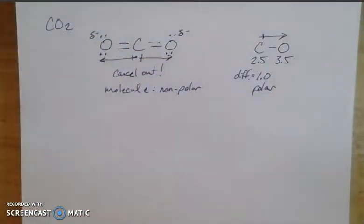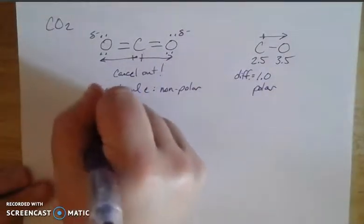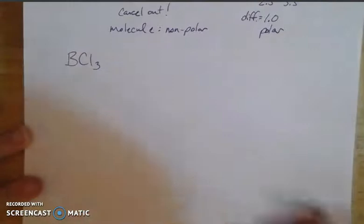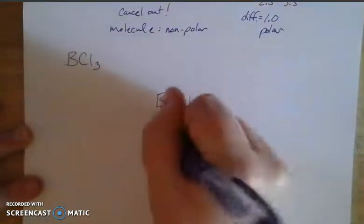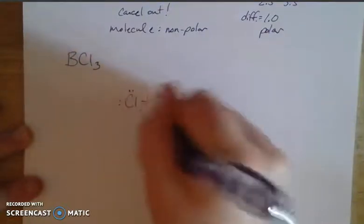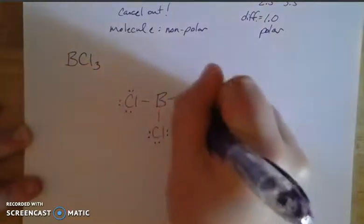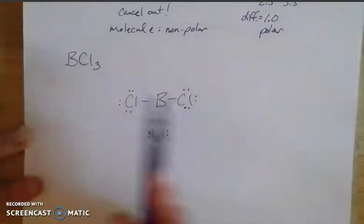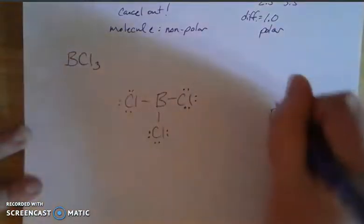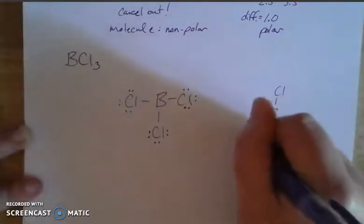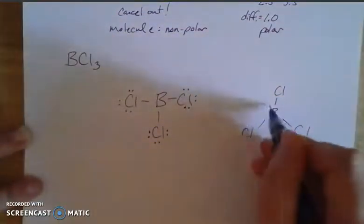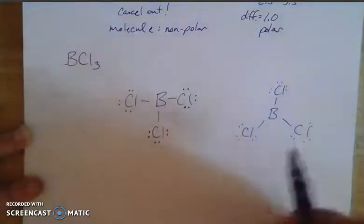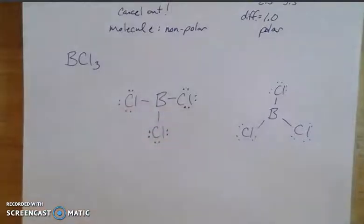Let's do one more example — boron trichloride, BCl3. Boron is a metalloid with three valence electrons, so it likes to make three bonds. The Lewis structure has lone pairs on all three chlorines but no lone pair on boron. With three things around the central atom, we get trigonal planar geometry — the Mercedes-Benz symbol — with 120 degree angles.